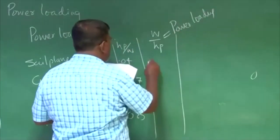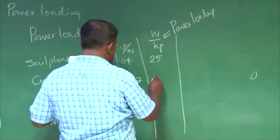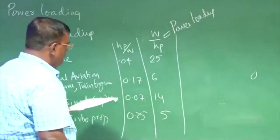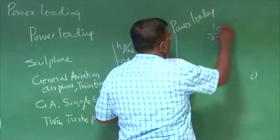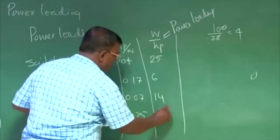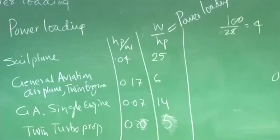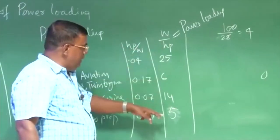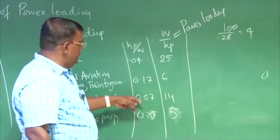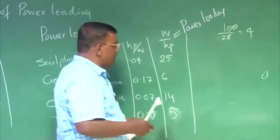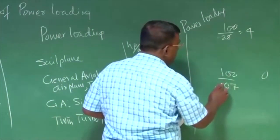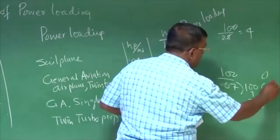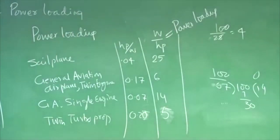So that will be typically 25, this will be roughly 6, this may be 14, this may be 5. So 1 by 0.25, 1 by 0.25 is how much? 1 by 0.25 is 100 by... 4 is 4. This may be 4. Twin turboprop is this value HP by W is typically 0.20. So W by HP which is inverse of this is 5. And this is for this airplane, single engine general aviation 0.07. So 1 by 0.07 will be 100 by 7. So that will be 14, around 14. So just take the inverse.